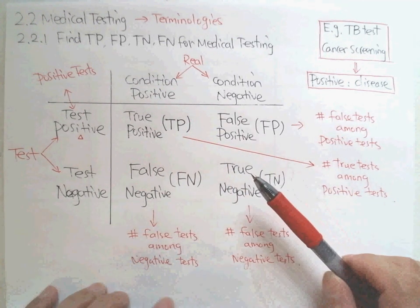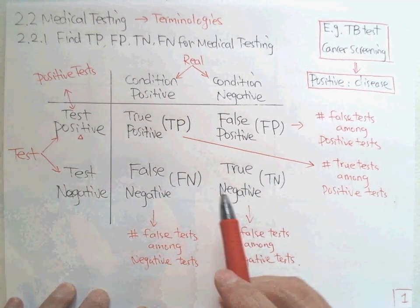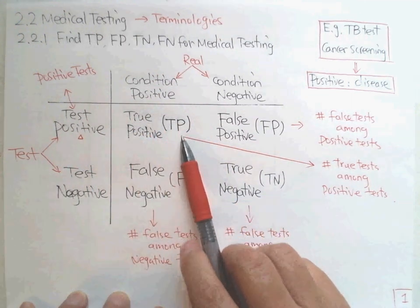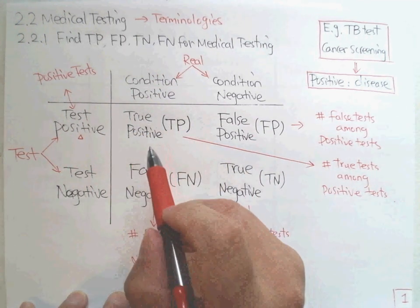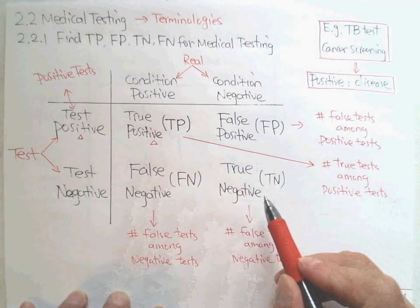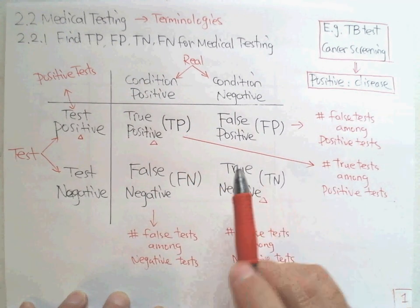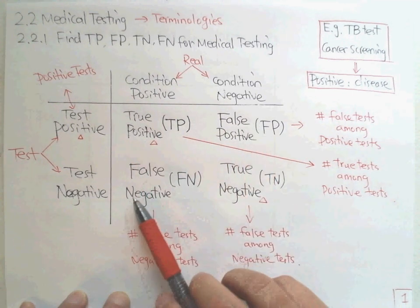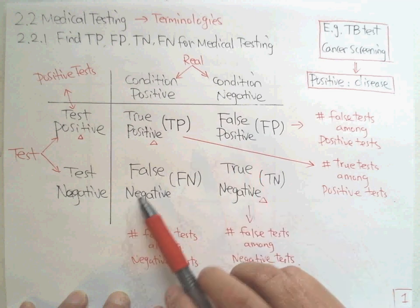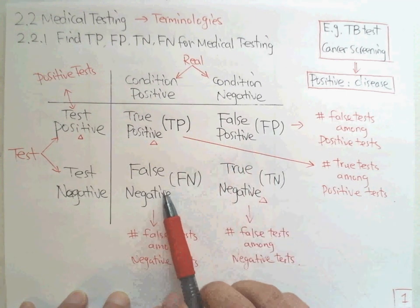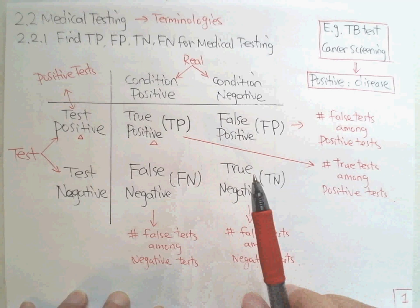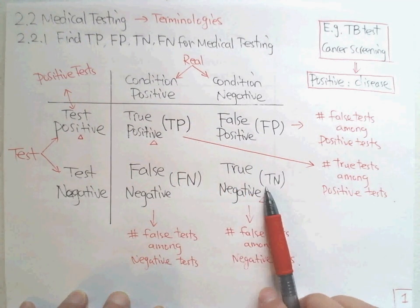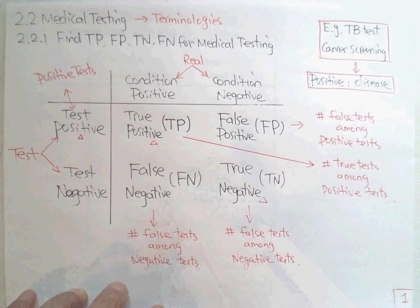So we have four terms. Looking back at the contingency table, the main diagonal gives us the true results — true positive and true negative. The off-diagonal gives us the false results — false positive and false negative. We have two positives and two negatives: true positive, false positive, false negative, and true negative. That covers all four definitions.